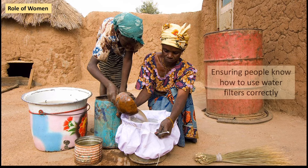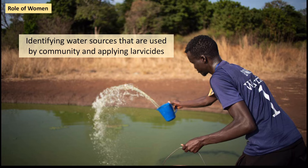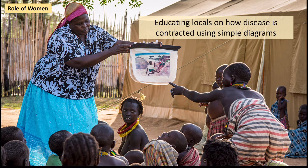The women also showed people how to use the filters properly — tightly putting the cloth around and ensuring the water is being poured over it with no tears or rips. They would identify water sources in the local community and make sure that larvicides, a kind of insecticide, were put into the water to kill off the water fleas and larvae. They would also educate locals, often using diagrams because literacy rates weren't that high in some rural areas. If anybody did get the disease, they would make sure those people were isolated, and because they could recognise the symptoms very easily, they knew when to keep people away from water sources to prevent re-contamination.